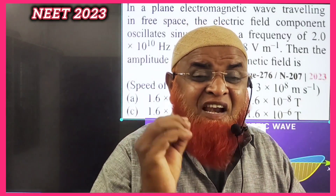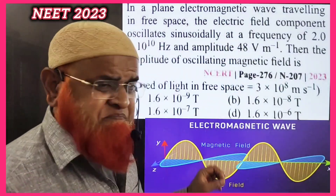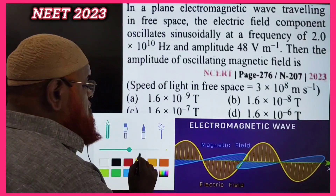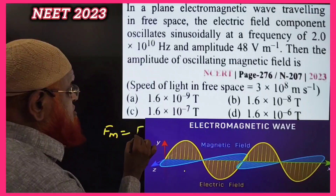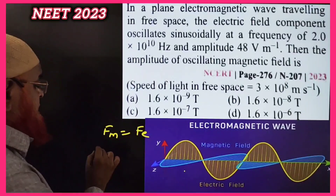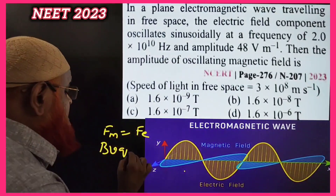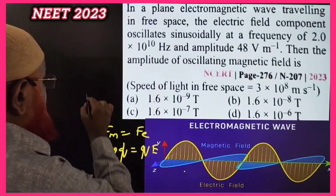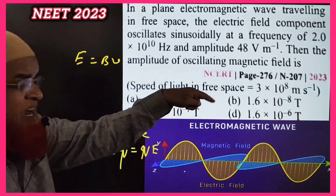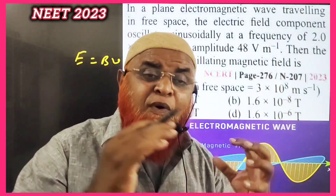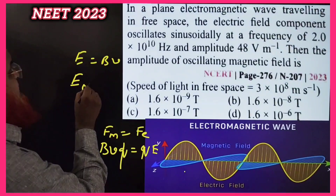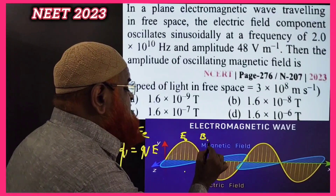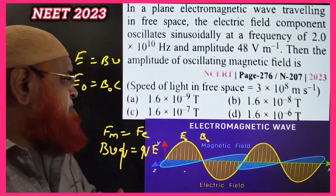This is a one-minute series concept on electromagnetic waves. An electromagnetic wave has both a magnetic field and an electric field. The force due to the magnetic field equals the force due to the electric field: F_B = BVQ and F_E = QE. Cancelling Q gives E = BV. For an EM wave, instead of ordinary velocity we use the speed of light c, so E₀ = B₀ × c, where E₀ and B₀ are the amplitudes of the electric and magnetic waves.